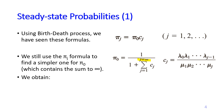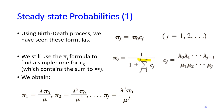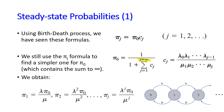Plugging in the j's to π_j, we obtain a formula and we see a pattern: π_1 is lambda over mu times π_0, π_2 is lambda squared over mu squared times π_0, and π_j is lambda to the power of j divided by mu to the power of j times π_0. This pattern arises because in the M/M/1 system the birth rate is always lambda regardless of the state.